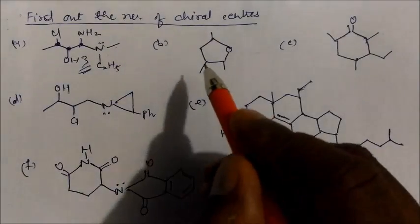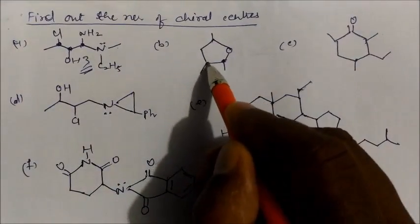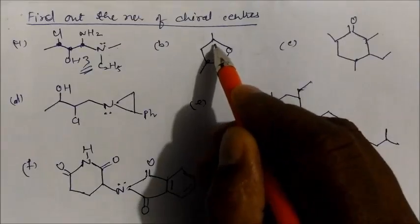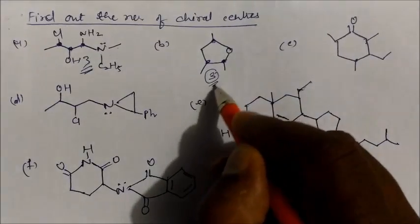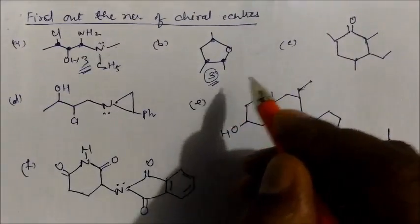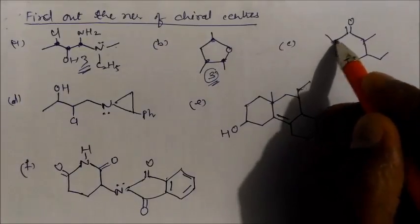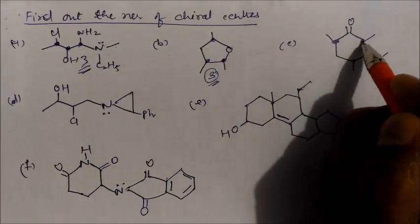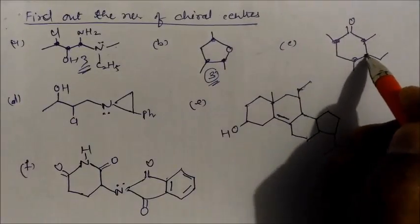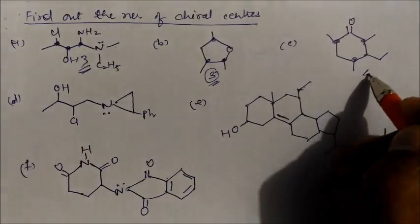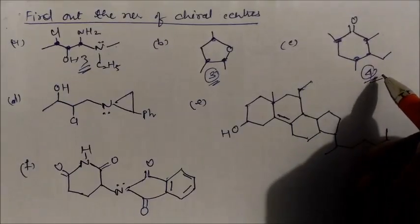Now in this case, one chiral center is here, one carbon chiral center is here, and one here — so there will be three chiral centers here. Now if you see over here: one, again two, again three, again four — so here in this case, we have four chiral centers.